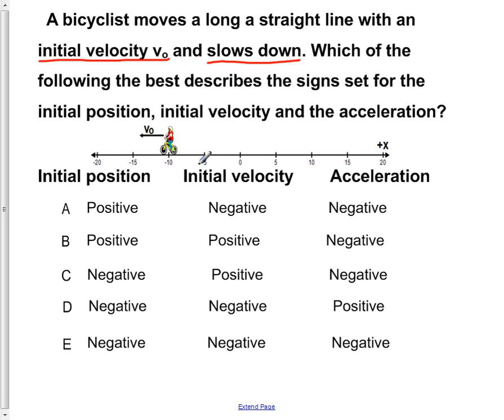So we look at our number line here, we see that the person initially starts at negative 10 meters. So we already know that the initial position has to be negative. So A and B, you can already cross those off. Because only C, D, and E have a negative initial position.